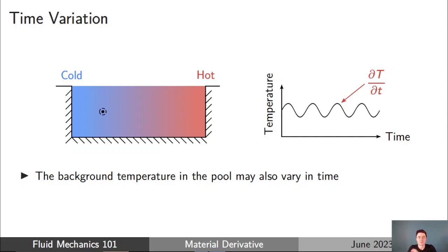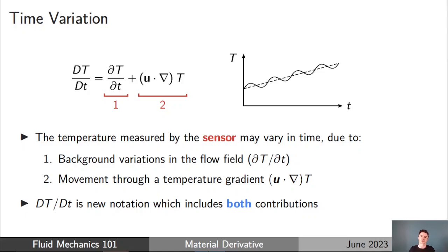Carrying on with this simple example, let's now consider the case where we have the sensor at a fixed location but the temperature of the pool is varying in time. If we do both — have a background temperature field varying in time and also move through a spatial temperature gradient — we get both contributions. Both the background variation of temperature in time and the movement through the spatial gradient contribute to the measured rate of change of temperature on the sensor.